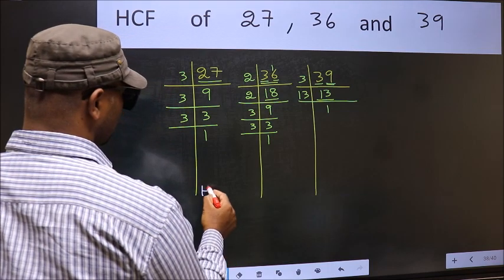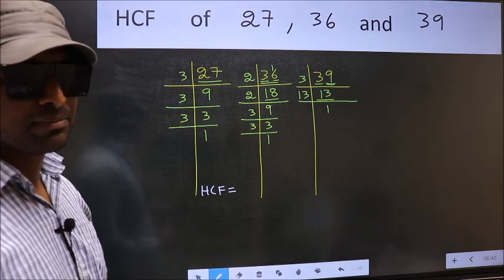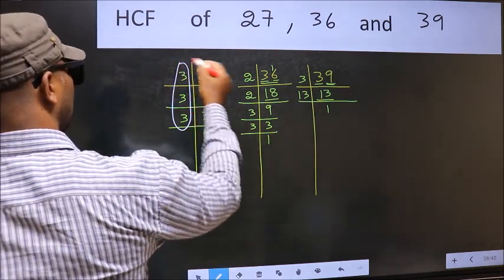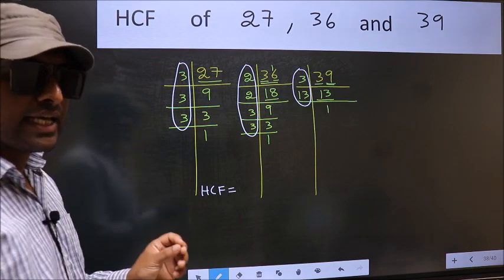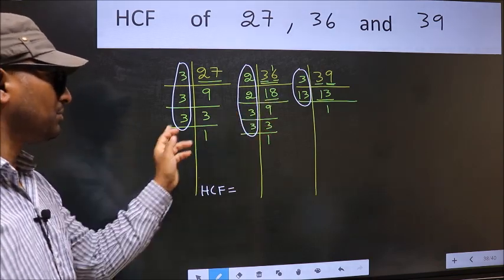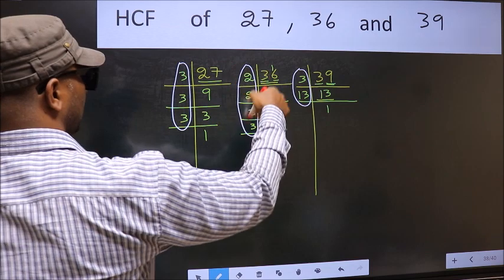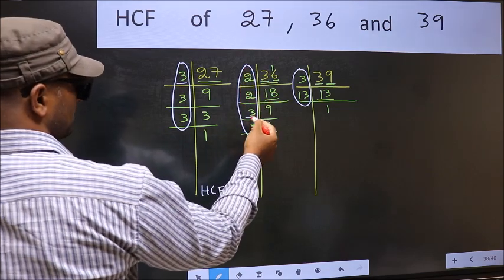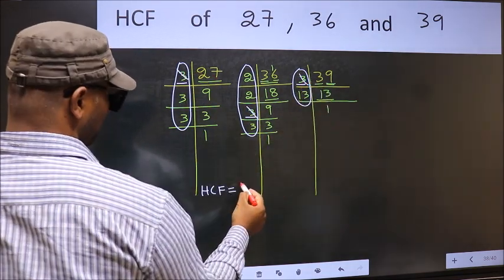Therefore, the HCF is the product of numbers which are present in all three factorizations. Let us find the numbers which are present in all three places. Starting with the number 3 — do we have 3 in the first factorization? Yes. Do we have 3 in the second? Yes. So we mark that 3.